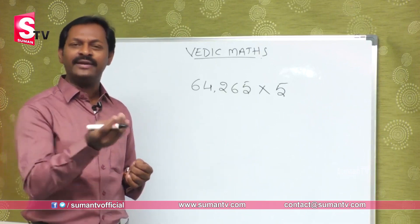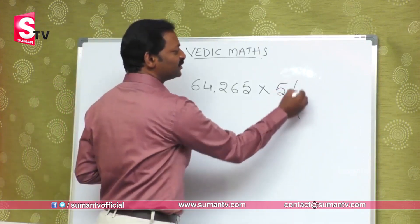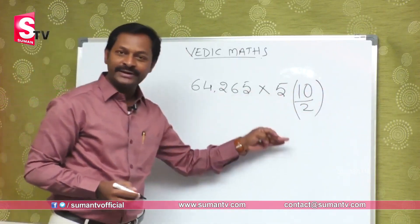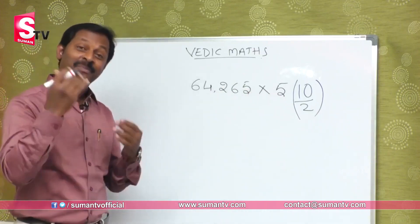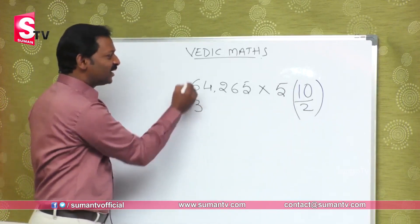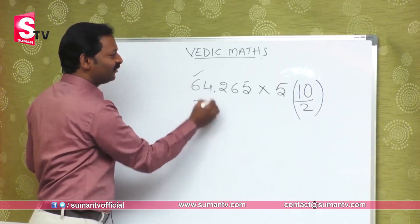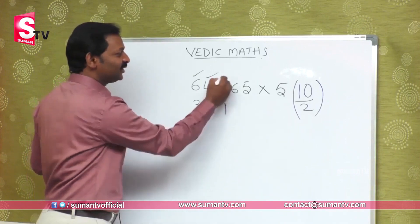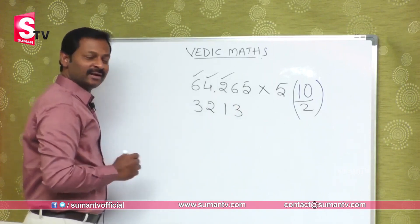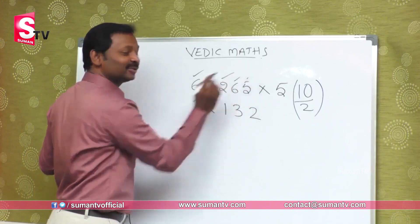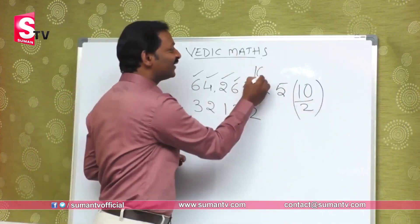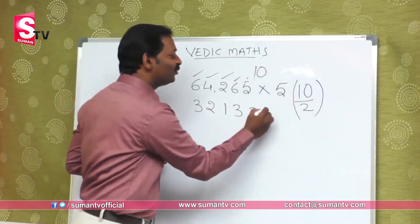Division is like dividing by 2. You can do the same method. Suppose if you want to do it, 5 means 10 by 2. By 2 means you divide this number by 2. 2 threes are 6. 2 twos are 4. 2 ones are 2. 2 threes are 6. 2 twos are 4. 2 fives are 10.